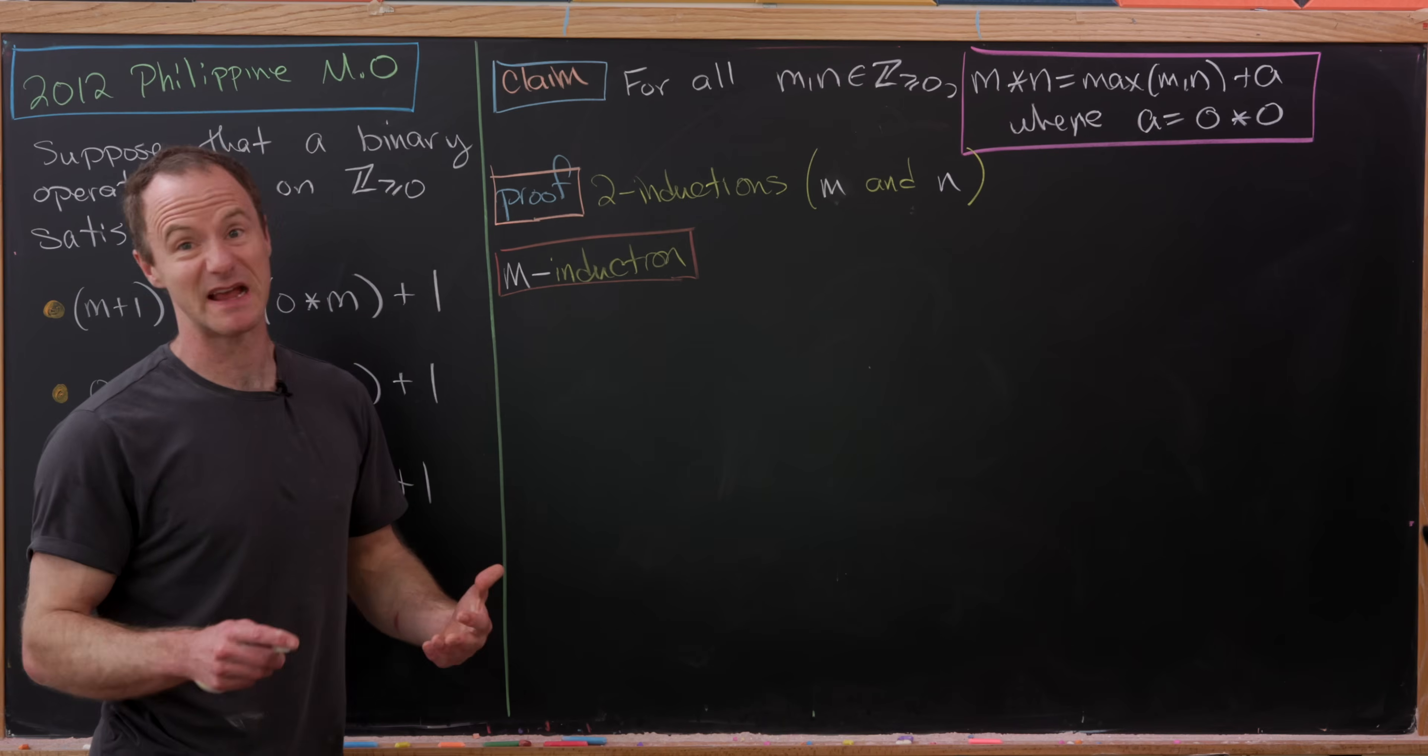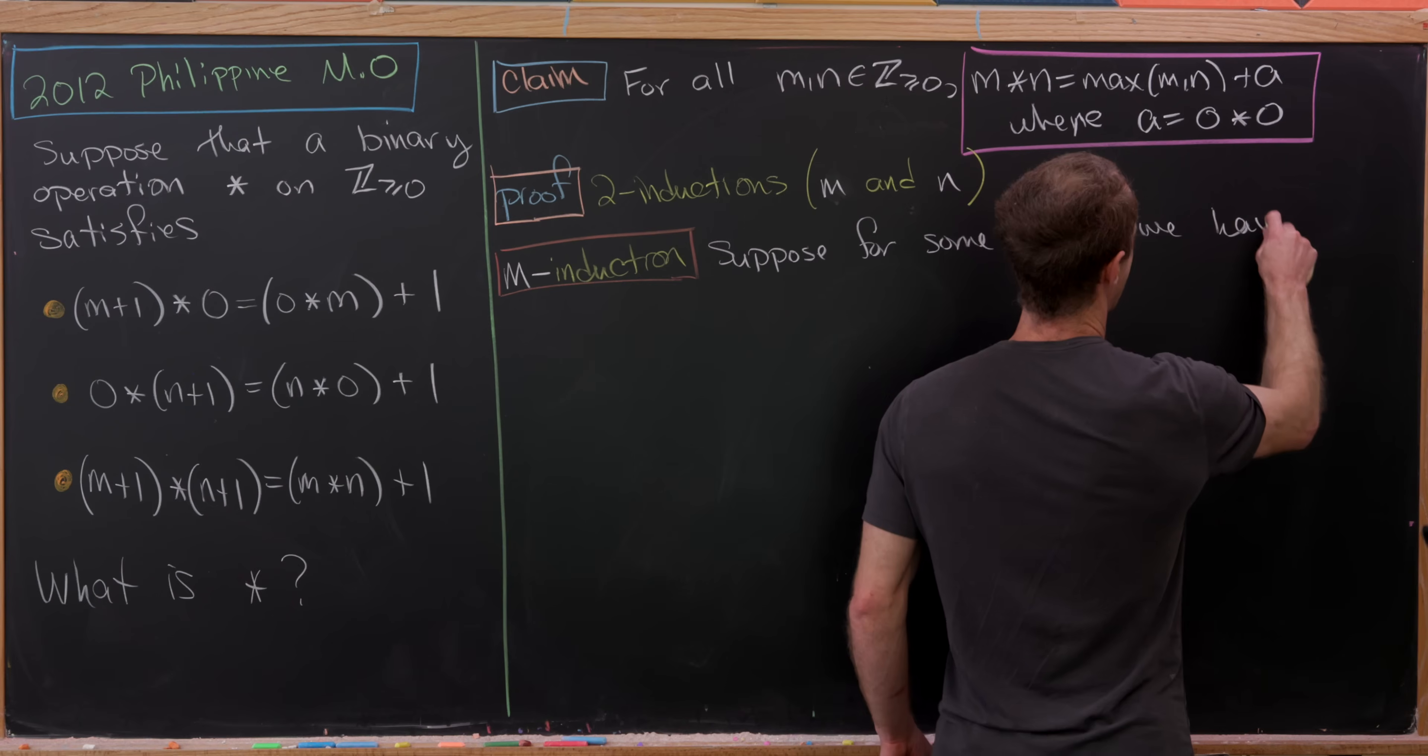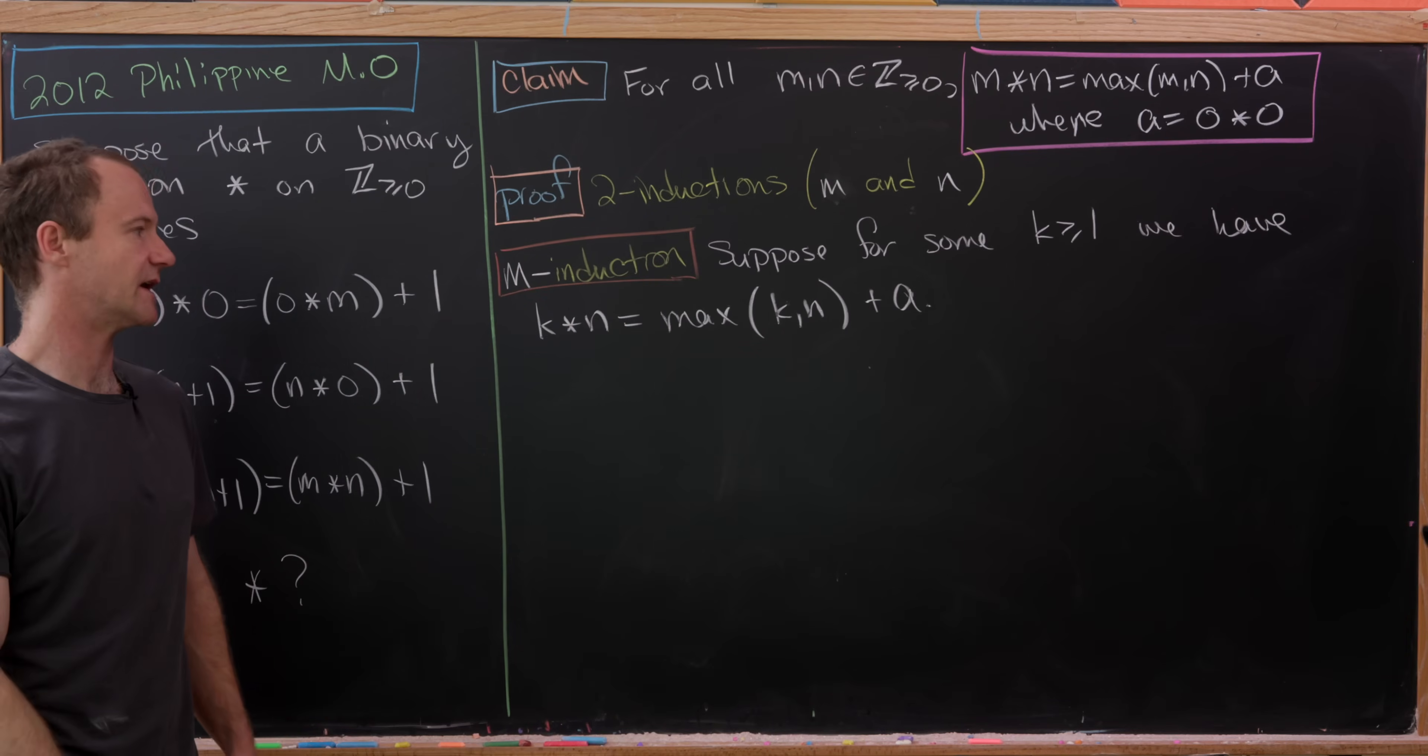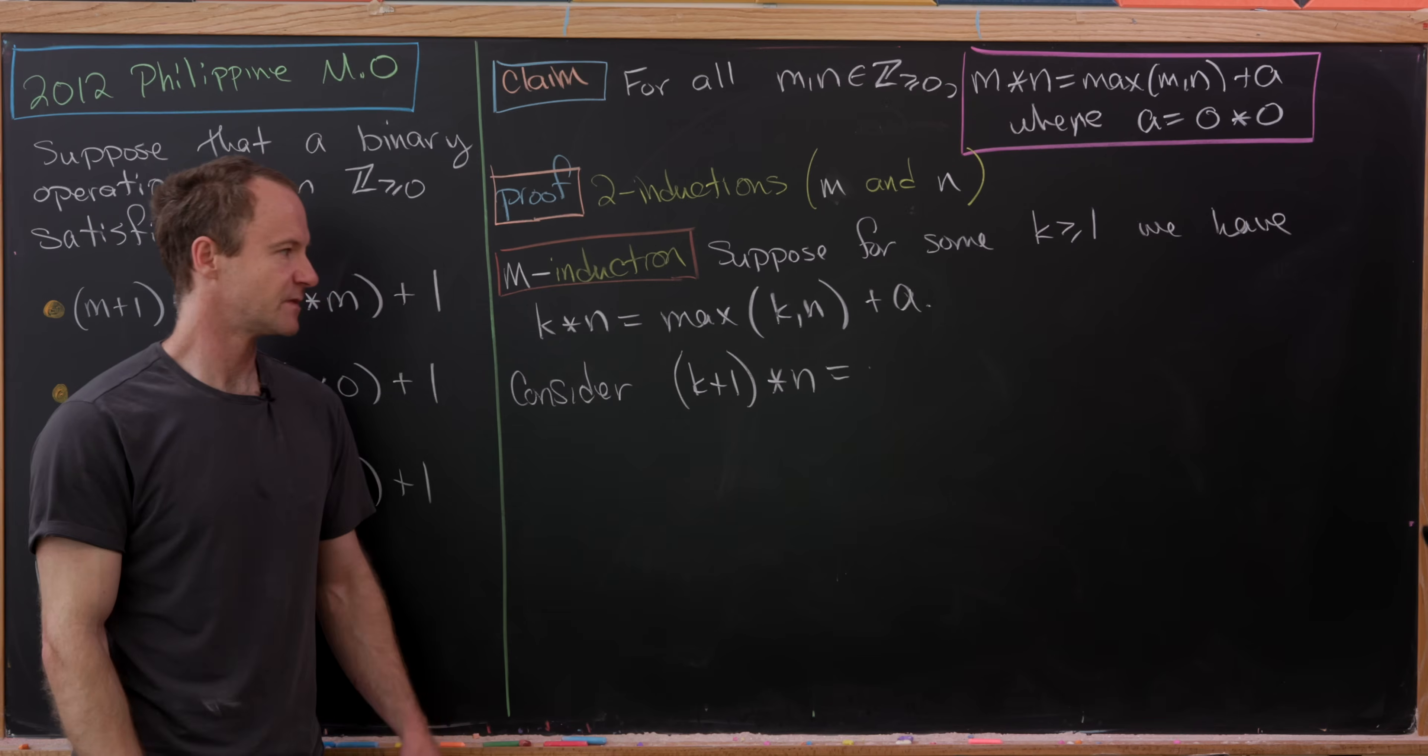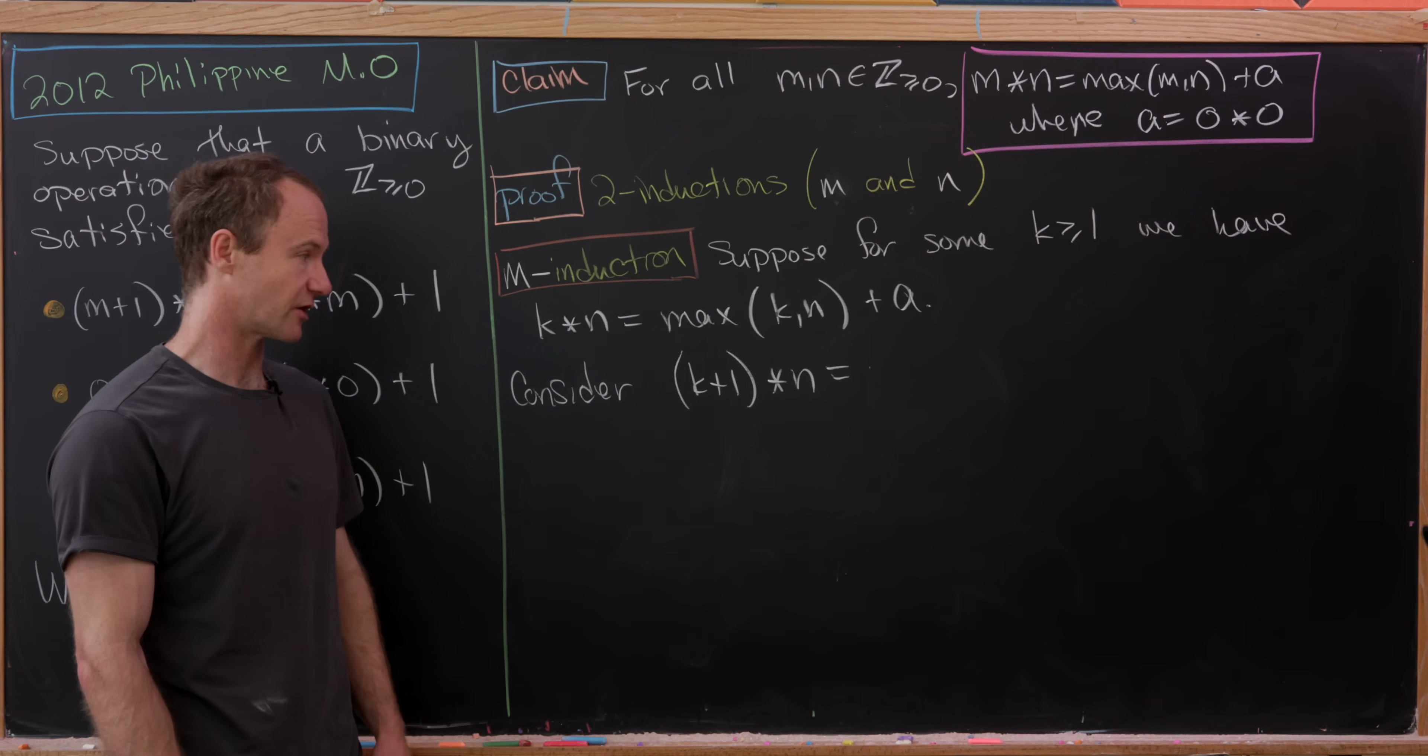We're going to do the m induction. We really already did a base case via our explorations. Let's make an induction hypothesis. Suppose for some k greater than or equal to 1, we have k star n equals the maximum of k and n plus our number a. Now let's consider the next case. Consider k+1 star n. Now you really need to pull this apart into two cases, depending on if n is 0 or n is bigger than 0. Maybe the n equals 0 case I'll leave as a homework exercise. We'll just look at the case when n is bigger than or equal to 0.